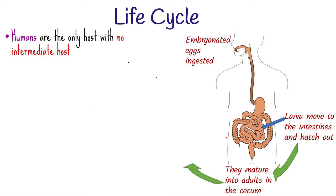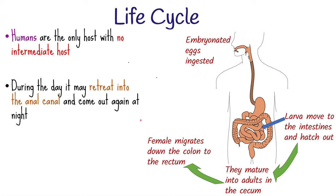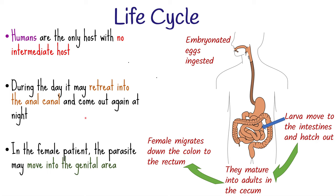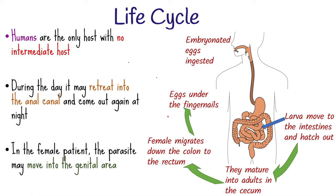When the female is ready to lay eggs, it migrates down the colon to the rectum. By night when the patient is sleeping, the worm comes out through the anus and migrates to the perineal skin to lay its sticky eggs. During the day it may retreat into the anal canal and come out again at night to lay more eggs. In female patients, the parasite may move into the vulva, vagina, and even into the uterus and fallopian tubes, sometimes reaching the peritoneum. The male worm dies after mating and is passed in the feces, hence it is rarely seen. After laying all the eggs, the female worm dies as well. The activity of the female worm crawling about the perianal region causes intense itching and scratching, which transfers infective eggs to the fingernails, leading to auto-infection and continuation of the cycle.